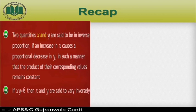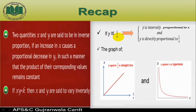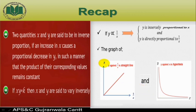We'll recap inverse proportions learned in the previous week. Two quantities x and y are said to be in inverse proportion if an increase in x causes a proportional decrease in y, such that the product of their corresponding values remains constant. If the product xy equals some constant k that is not zero, then x and y are said to vary inversely. Also, if y is inversely proportional to x, it means y is directly proportional to 1/x. The graph of y against x is a hyperbola not passing through the origin, and the graph of y against 1/x is a straight line that passes through the origin.